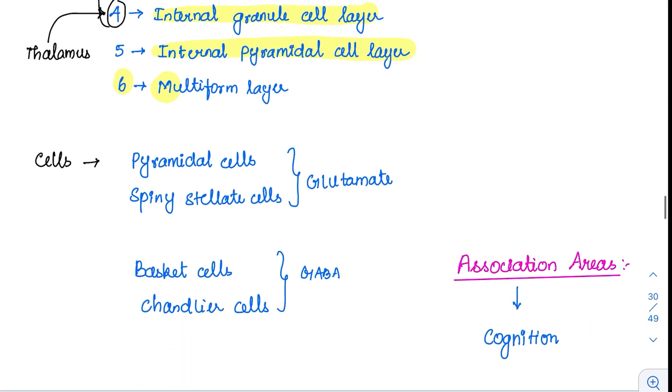Now, there are four different types of cells. Those cells are pyramidal cells, spiny stellate cells, then basket cells and chandelier cells. So these are the four different types of cells which are present in the cerebral cortex.